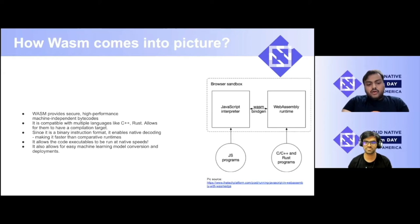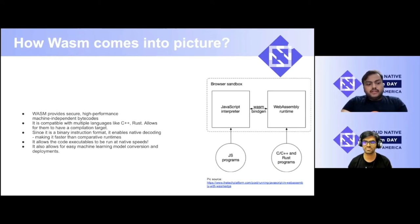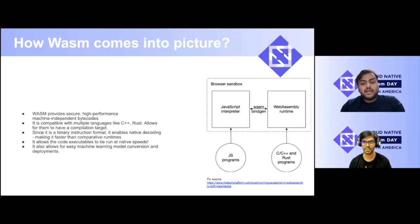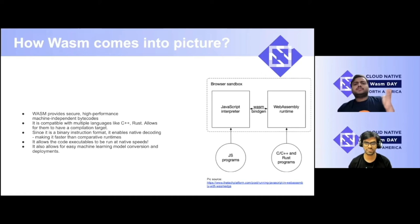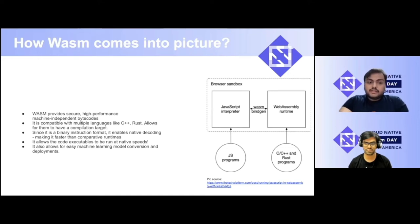Now we'll be looking at how WebAssembly comes into the picture. One of the most important things about WebAssembly is that it is a compiled target that effectively provides executables that run at native speed, and that helps in producing extremely small and efficient containers that can run virtually anywhere with the added benefit of being highly secure. WebAssembly provides highly secure, high performance, machine-independent bytecodes. Another important aspect is that it is compatible with multiple languages like C++, allowing them to have a compilation target. Since it is a binary instruction format, it enables native decoding, making it faster than comparative runtimes.